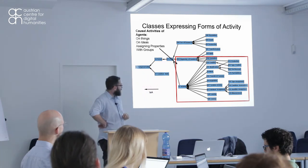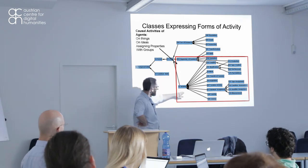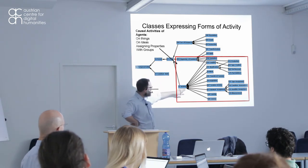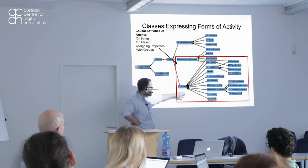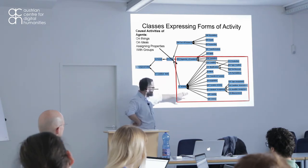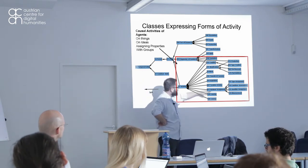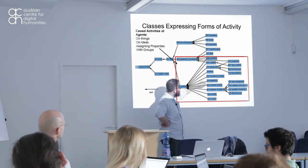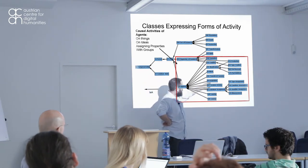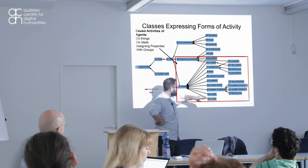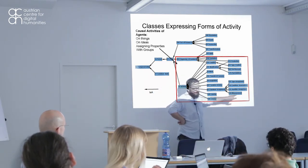Everything that chains down underneath this level is just iterations more specifically about different classes of items. Creation is the bringing into existence of a conceptual object; formation is the bringing into existence of a group; birth is the bringing into existence of a person; production is the bringing into existence of a physical thing; and type creation creates a new category. For ceasing to be: dissolution is the end of a group, death the end of a person, destruction the end of a thing, and transformation is the end of one thing and the start of a new thing.